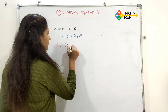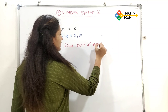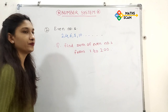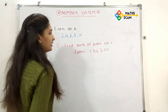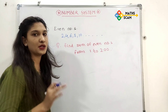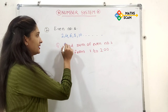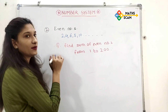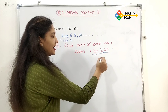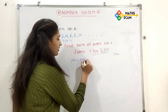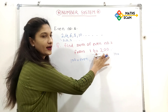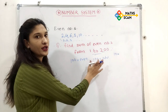If a question comes: find the sum of even numbers from 1 to 200. In 1 to 200, how many even numbers are there? Since even numbers are 2, 4, 6, 8, 10... and odd numbers 1, 3, 5, 7... are also present, only half of 200 are even. Half of 200 is 100, so there are 100 even numbers and 100 odd numbers in 1 to 200. For natural numbers, count is 200; for even numbers, count is 100.